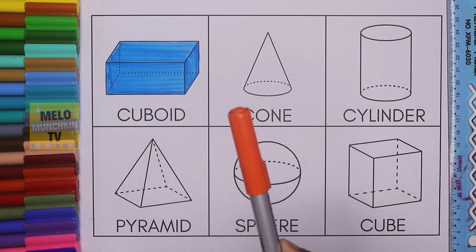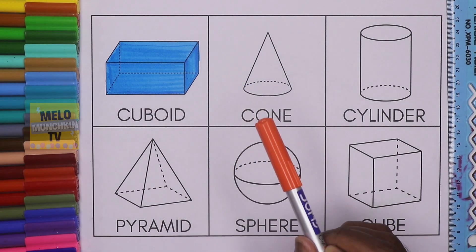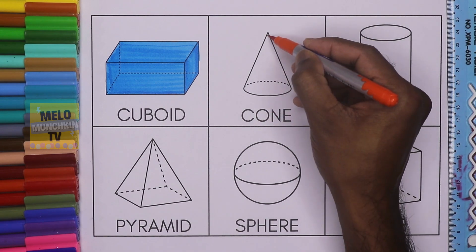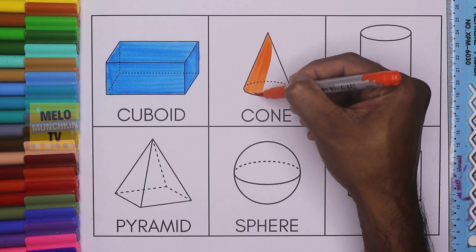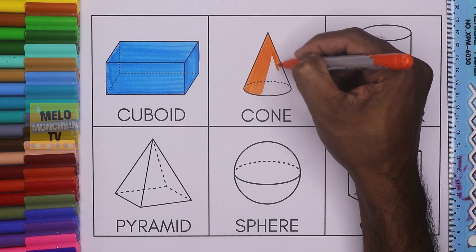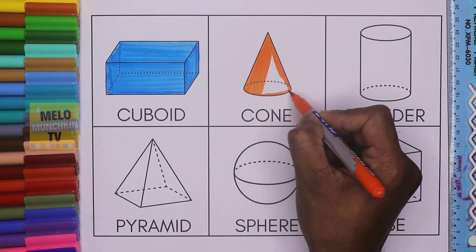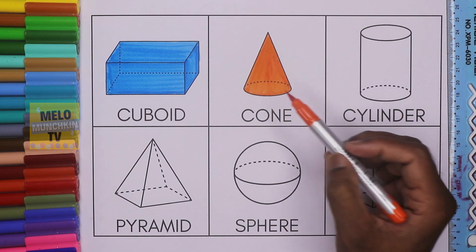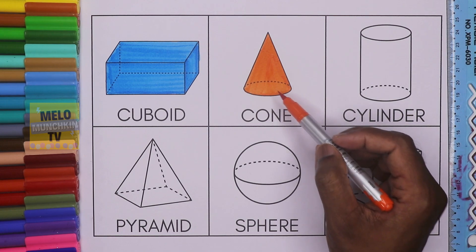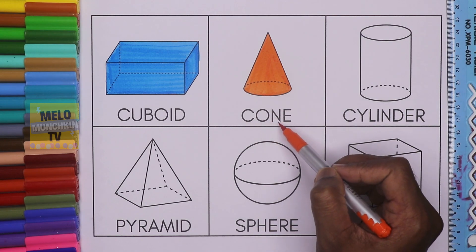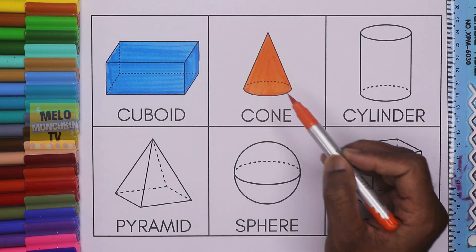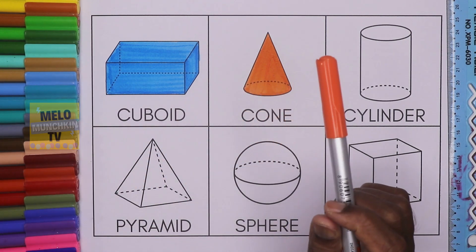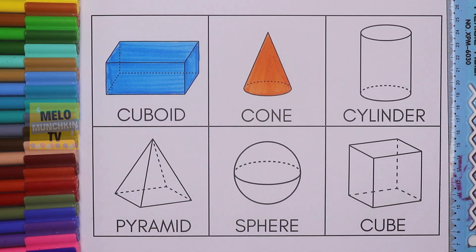Next I'll take orange color to color the cone. This is called cone. C-O-N-E, cone, and this one is orange color.